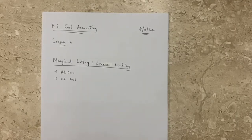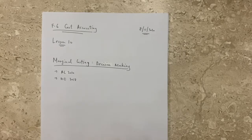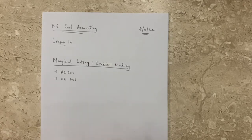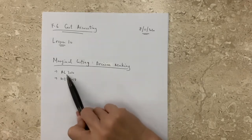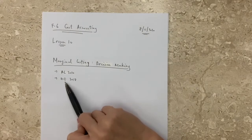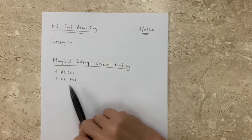Hi everyone, this is Mrs. V. Chen. Welcome to Form 6 Cost Accounting Lesson No. 10. Today's topic is about marginal costing for decision making, and we are going to do two past paper questions: one from A-Level 2010 and then DSE 2018.